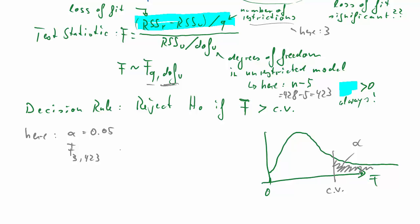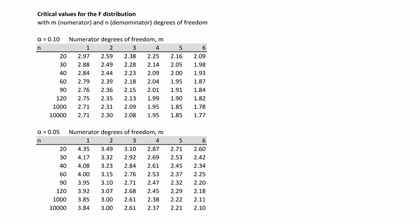What we now need is the critical value for this distribution. So we'll go to a table. For an F-distribution, we look at the subtable for alpha of 5%. Then we have numerator degrees of freedom. In our case, they were called Q. And we have 3,